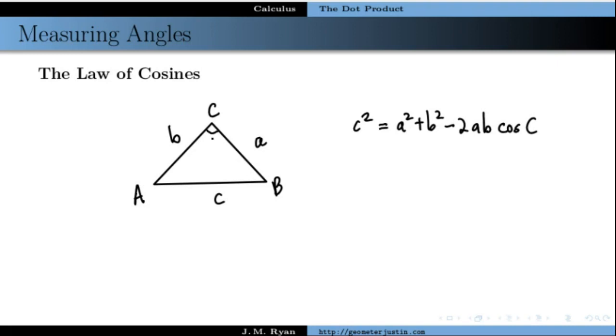And of course this is the angle C right here. And so this is the law of cosines, and we are going to use this to help us measure angles between two vectors.